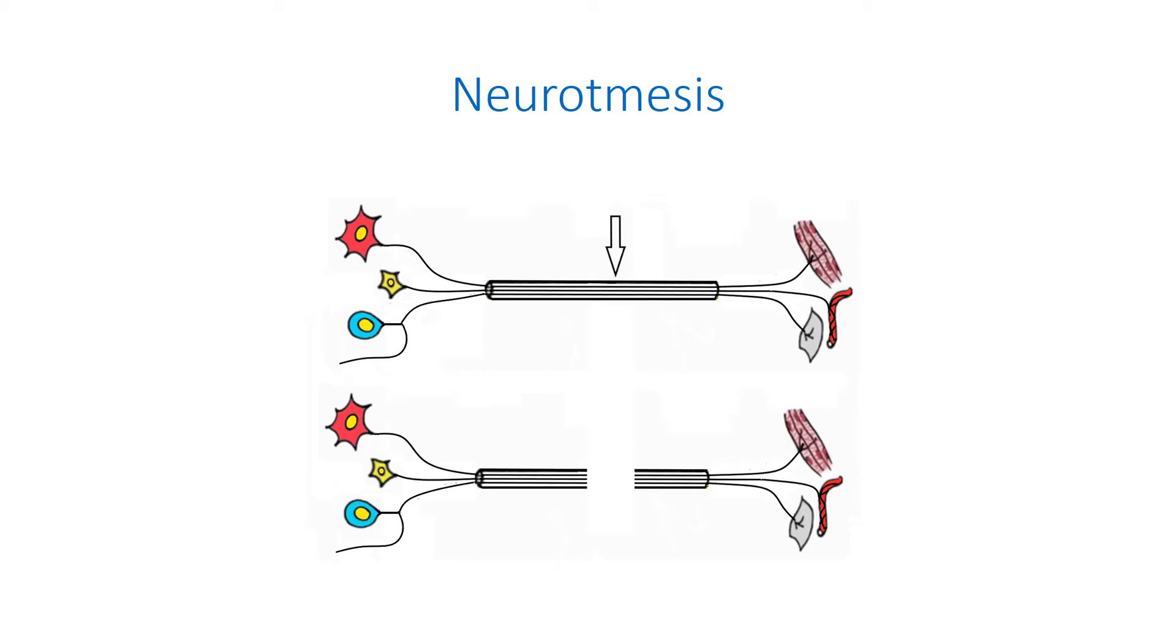A connection of distal stump axons with the perikarya is lost. The area of the nerve fiber experiencing the direct impact of the traumatic factor is destroyed. The nerve fibers in the proximal and distal stumps also break down, which is however limited only to one or two nodes of Ranvier closest to the injury site. Thus, a gap develops between the proximal and distal stumps.